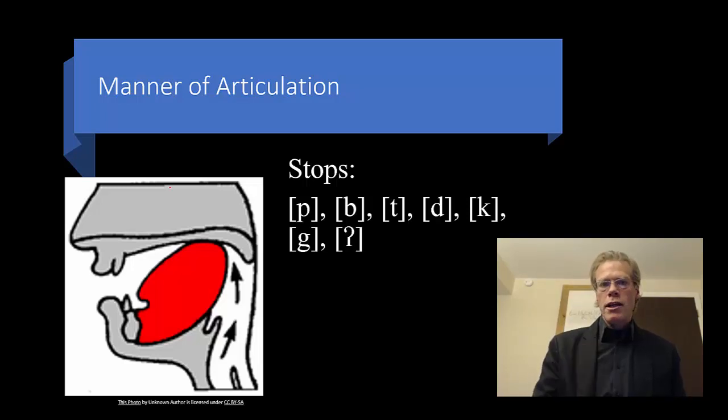It might be even easier to hear if I do a vowel before and after. A-ba, a-ba, a-ta, a-da, a-ca, a-ga. I have an artyne with that one. A-a. That's it. A-a. Okay.